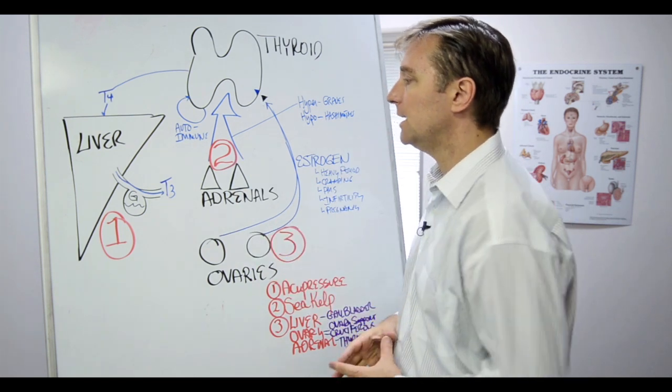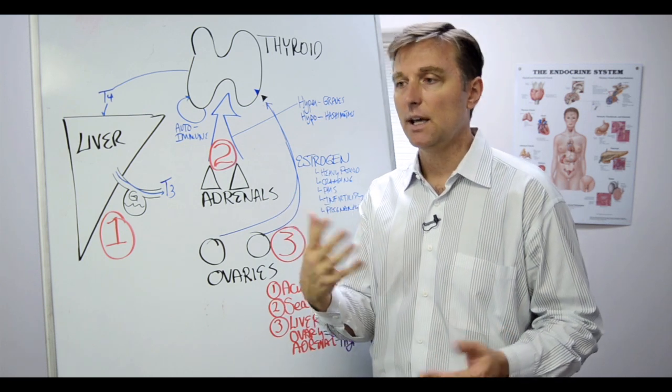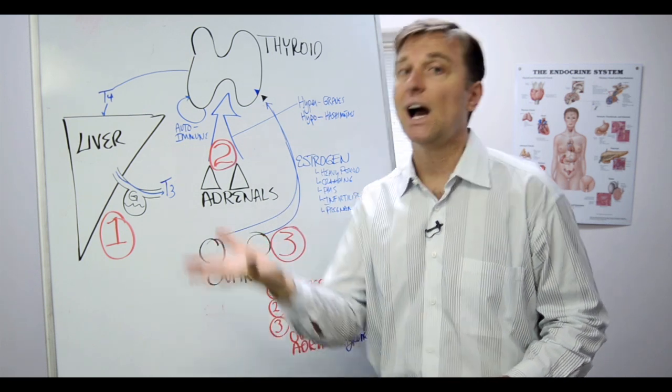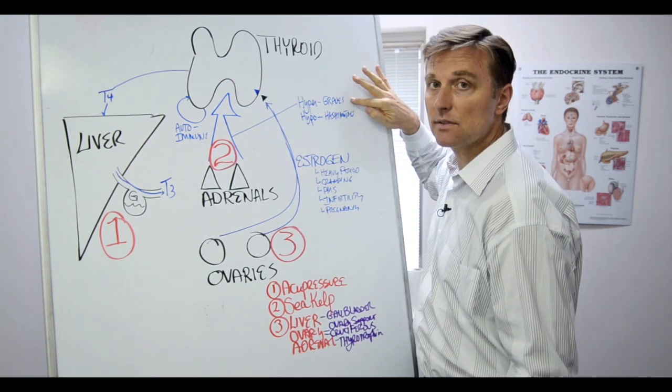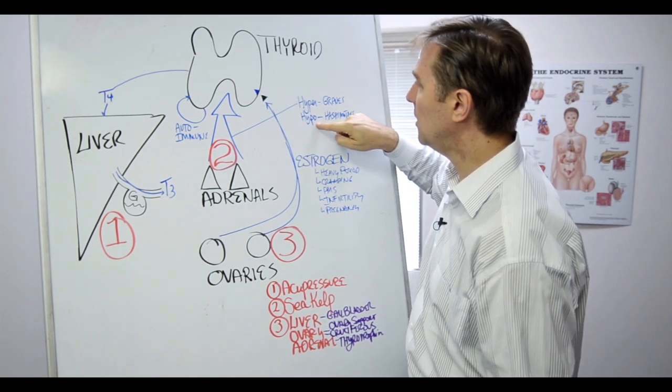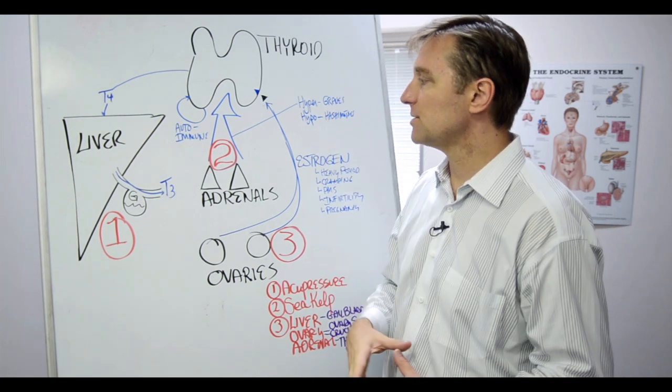So there's two main autoimmune diseases with thyroid. There's one where the thyroid hormones are too high - it's hyperthyroid. That's called Graves. And then there's a hypo, which is too low, and that's called Hashimoto's. But both of them are triggered by stress.